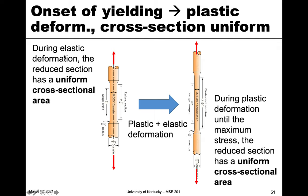Let's start with elastic again. During elastic deformation, our reduced section of the tensile sample — the dog bone — has a uniform cross-sectional area, so everything in there has the same diameter. When it becomes plastic, initially during plastic deformation, the cross-section of the reduced section is also uniform.